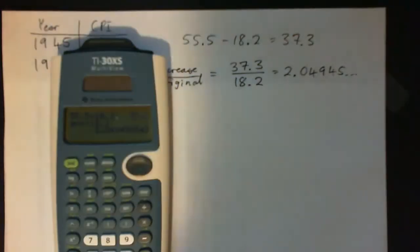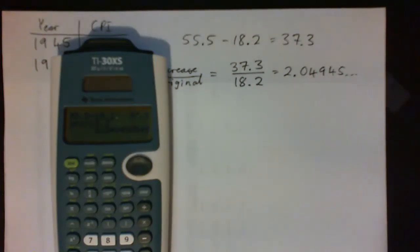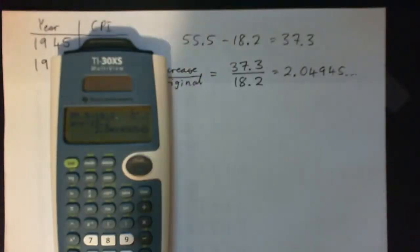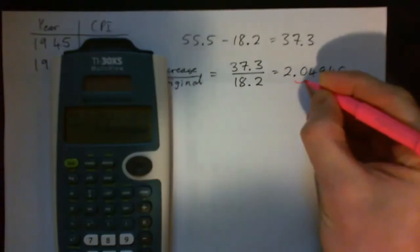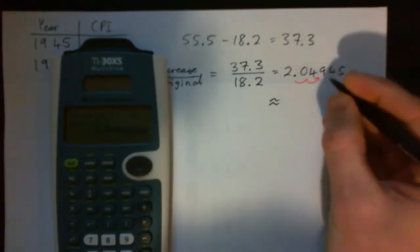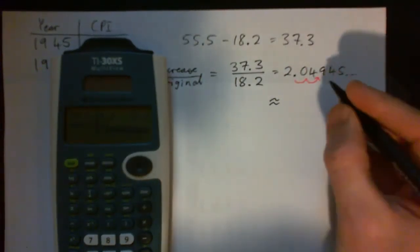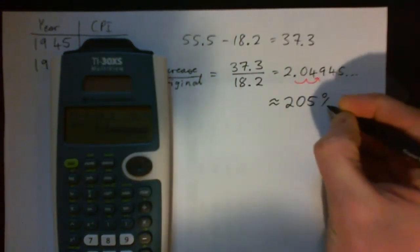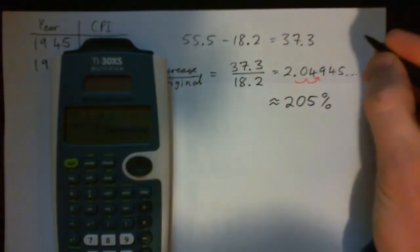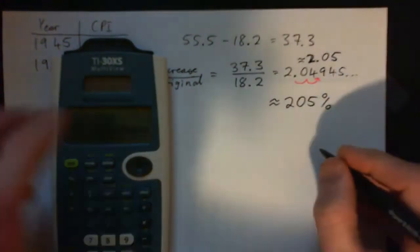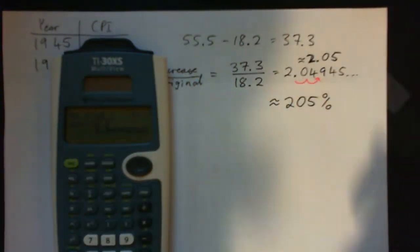I think we've got to round that to the nearest whole number percent. We move this over two spots and that becomes approximately, and of course this rounds up, so that's approximately 205 percent. You can do it in two steps: 2.05 first, then write it as 205 percent. That is the inflation rate.